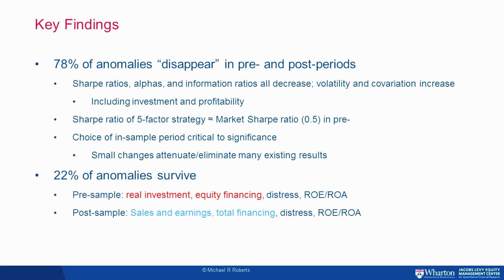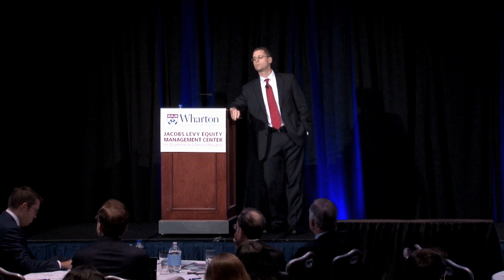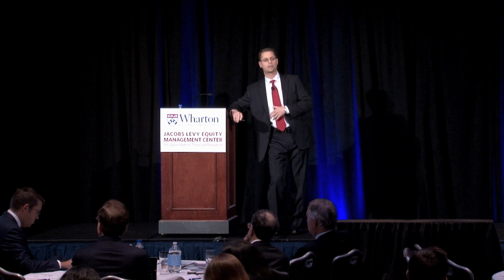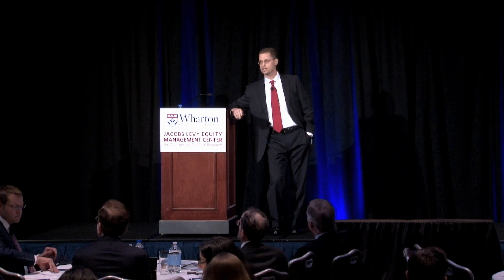The glass-is-one-quarter-full finding: 22% of anomalies survive out of sample — and since we're looking at 36, that's a fair number. Earlier in the 20th century, anomalies related to real investment (inventory or capital expenditures) and equity financing, as well as distress and accounting returns, are most prominent. In the second half, it's anomalies related to sales, earnings, and total or debt financing that seem to persist.